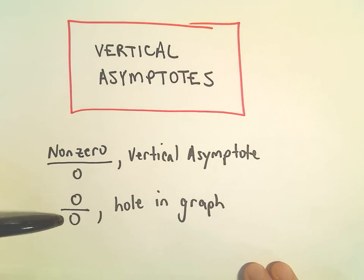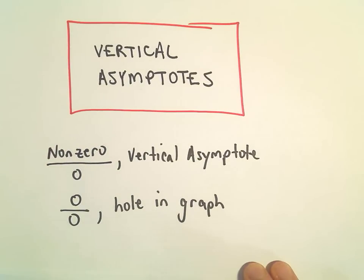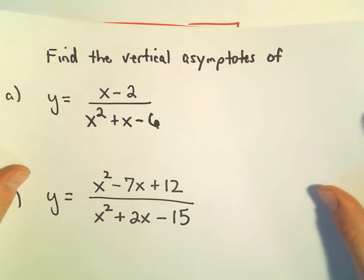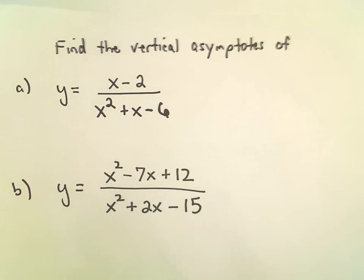It turns out if you get 0 over 0, what's going to happen is you would actually just have a little hole in the graph. All right, so let's find the vertical asymptotes of these functions.